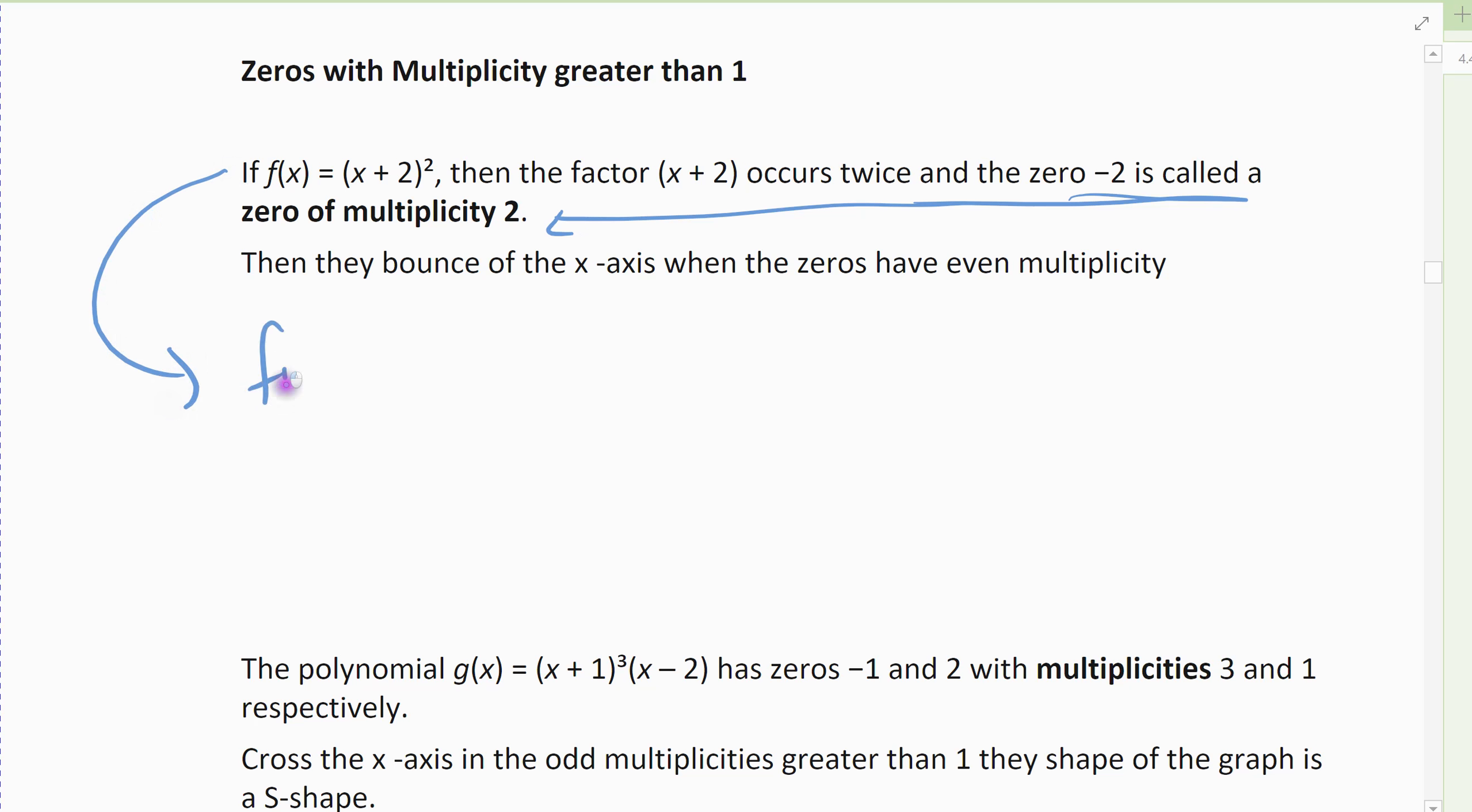If I write this out, (x + 2) times (x + 2). Now there's only one zero, but there were two factors of that zero. That's what the multiplicity means. I multiplied that zero twice. That's why it was the (x + 2)² there.